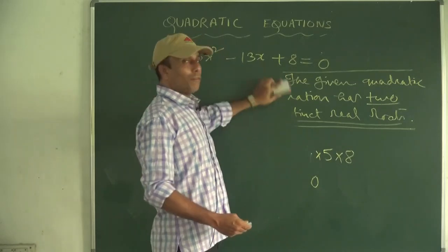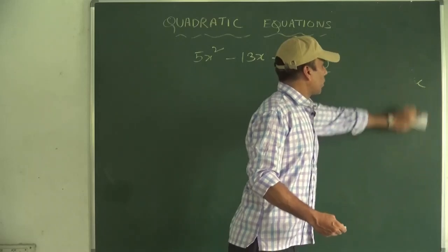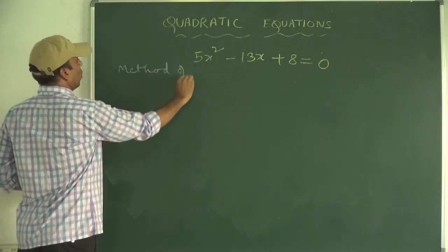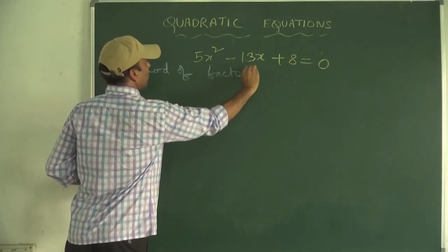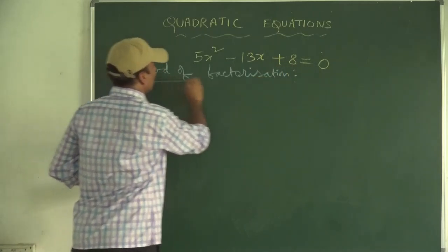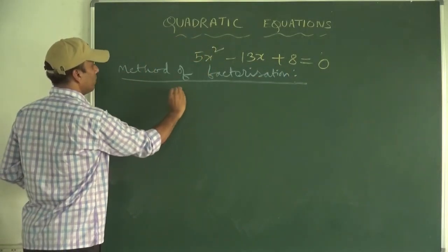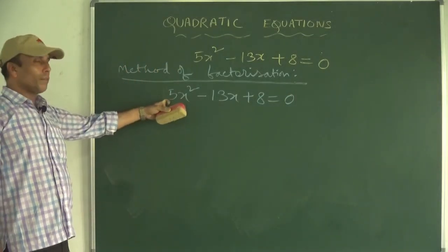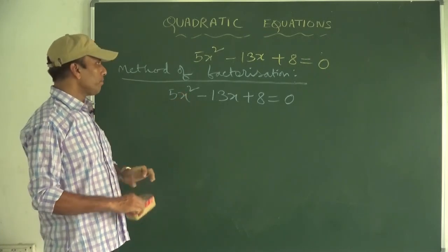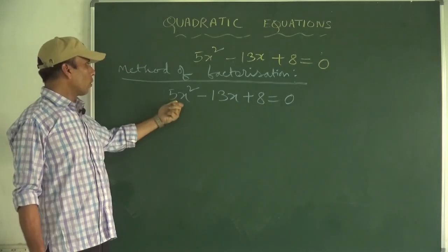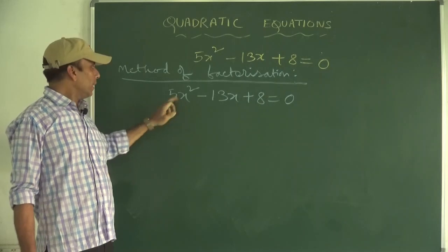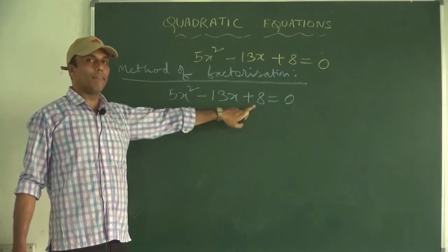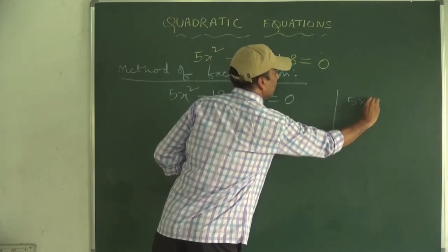Our first method is the method of factorization. We will solve 5x² - 13x + 8 = 0 by the method of factorization. Our first work will be to find the product of the constant with the coefficient of x². The coefficient of x² is 5 and the constant is 8, so the product is 5 × 8 = 40.